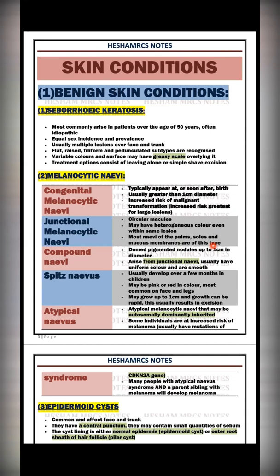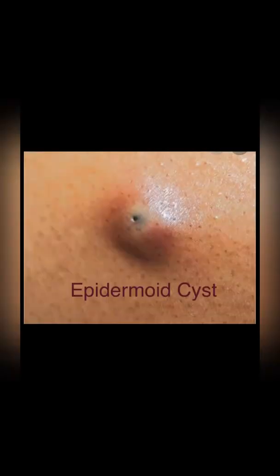The third benign condition is the epidermoid cyst, common in areas with hair — the face and trunk. It has a central punctum. It resembles a sebaceous cyst, but a sebaceous cyst arises from sebaceous glands. If arising within the epidermis, it is an epidermoid cyst. If arising from the outer sheath of the hair follicle, it is called a pilar cyst. The picture shows a central punctum with surrounding hyperemia, located within the trunk.